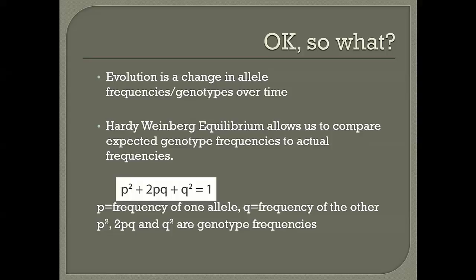Note that p is an allele frequency, while p² is a genotype frequency. For example, if p stands for the purple allele (big P) and q stands for the white allele (little p), then p² represents the homozygous purple genotype (PP), 2pq represents the heterozygous genotype (Pp), and q² represents the homozygous white genotype (pp). We can use allele frequencies to calculate what genotype frequencies should be if we are in Hardy-Weinberg equilibrium.